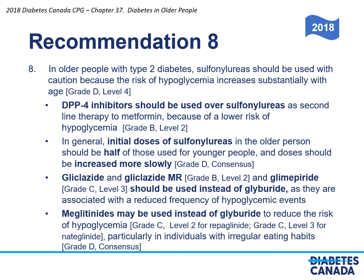Sulfonylureas should be used with caution in older people because the risk of hypoglycemia increases substantially with age. DPP-4 inhibitors should be used over sulfonylureas as second-line therapy to metformin because of a lower risk of hypoglycemia. Initial doses of sulfonylureas in older persons should be half of those used for younger people, and doses should be increased more slowly. Gliclazide, gliclazide MR, and glimepiride should be used instead of glyburide as they are associated with reduced hypoglycemia. Meglitinides may be used instead of glyburide to reduce hypoglycemia risk, particularly in individuals with irregular eating habits.